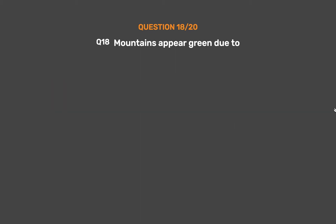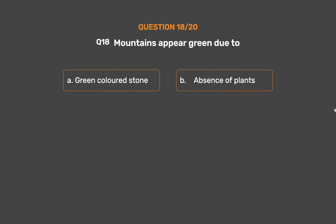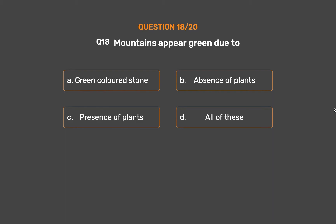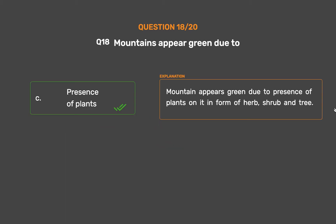Question number 18. Mountains appear green due to. Option A: Green colored stone. Option B: Absence of plants. Option C: Presence of plants. Option D: All of these. The correct answer is Option C: Presence of plants. Mountains appear green due to the presence of plants on them in the form of herbs, shrubs and trees.